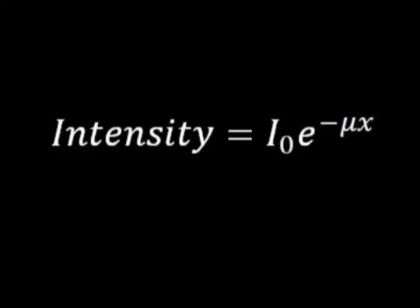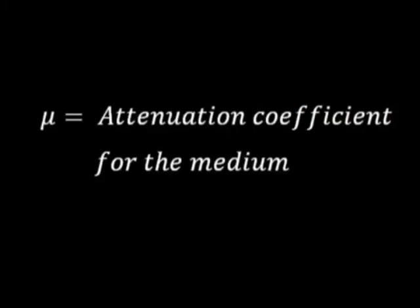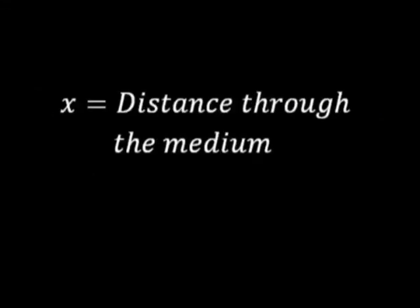The equation for intensity is I equals the initial intensity multiplied by E to the power of minus mu times x, where mu is the attenuation coefficient for the medium, and x is the distance through the medium.